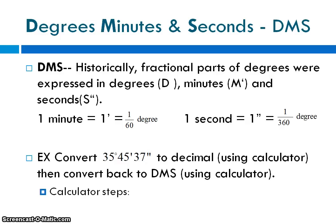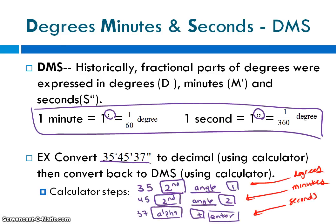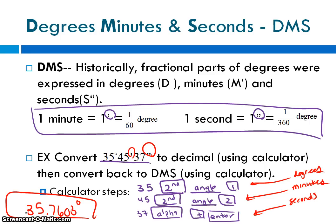Lastly, degrees, minutes, and seconds — DMS — is a way of subdividing an angle. One minute is 1/60th of a degree, and one second is 1/3600th of a degree. To convert to decimal using a calculator: press 35, then second, angle, option 1 for the degree symbol, option 2 for the minutes symbol. For seconds, use the alpha button near the second key, then plus, and press enter. The result is 35.7603 degrees. You can convert back and forth between DMS and decimal degrees. I'll show you in class if you have trouble locating these buttons. Have a good night.